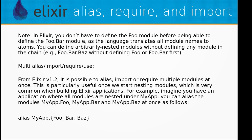Note that in Elixir you don't have to define the Foo module before being able to define the Foo.Bar module, as the language translates all module names to atoms. You can define arbitrarily nested modules without defining any module in the chain — for example Foo.Bar.Baz without defining Foo or Foo.Bar first.